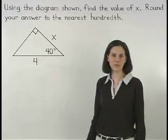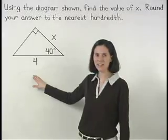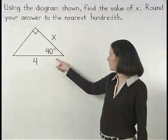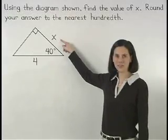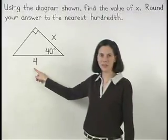Be very careful when setting up the ratio when the triangle has been rotated like it is here. So we're given that the side adjacent to the 40 degree angle has a length of x and the hypotenuse of the triangle has a length of 4.